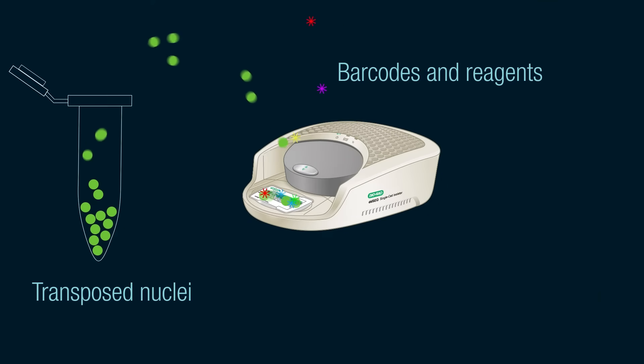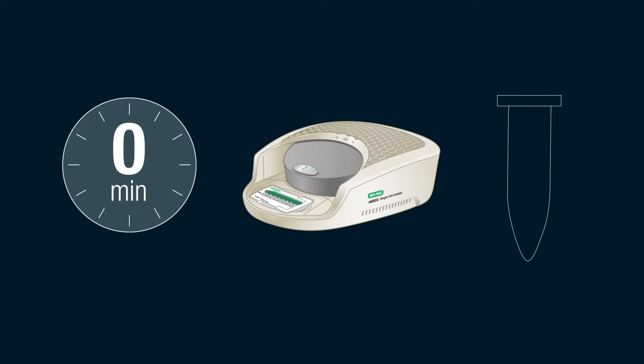Using the DD-Seq single-cell isolator, unique barcodes, reagents, and transposed nuclei are isolated in droplets within five minutes.